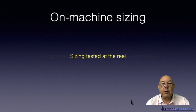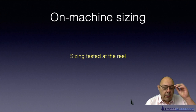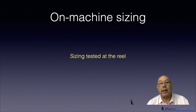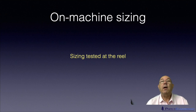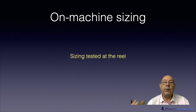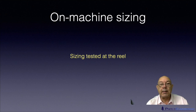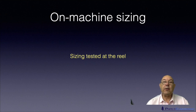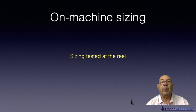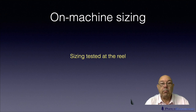The third definition is on machine sizing. This is a bit confusing — it sounds like you're doing the sizing on the machine, but that's completely wrong; nothing to do with that. On machine sizing really means what degree of sizing has been developed in the sheet while it was just on the machine. You take the reel at the end of the machine, take a sample of paper, test it, and whatever sizing you get is the on machine sizing value, usually measured in Cobb.